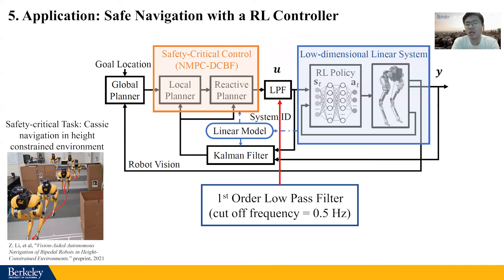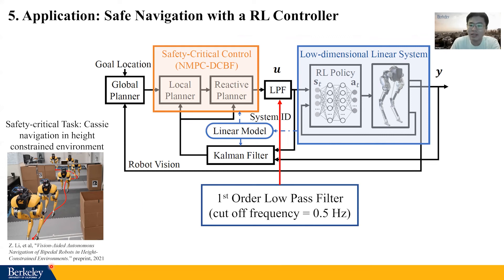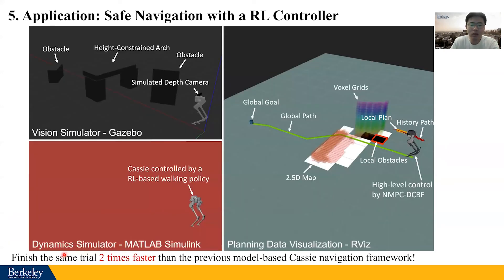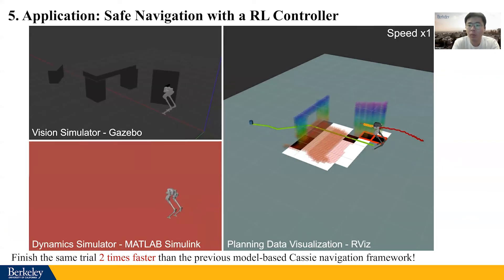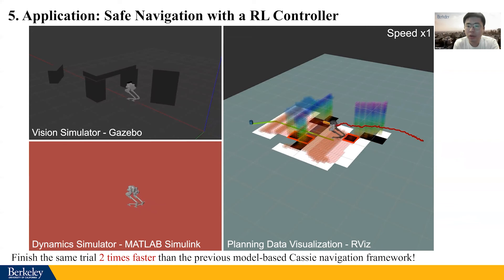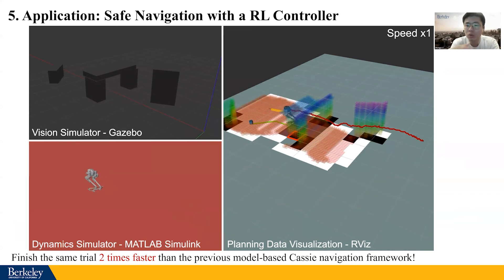Before solving this theoretical question, we can apply what we found in a safety-critical task. Using this RL policy, the closed-loop system becomes a new open-loop linear system. We use this linear model in a high-level safety-critical controller — namely MPC with control barrier functions — to provide safety guarantees as CASI navigates in a highly constrained environment. In the joint simulation, CASI uses the proposed method to track a global path while avoiding nearby obstacles. When the robot encounters a height-constrained space, it crouches down, travels underneath, then quickly recovers to normal height and accelerates toward the goal while stopping in front of obstacles.